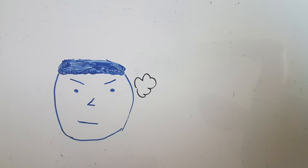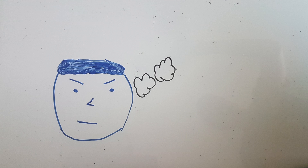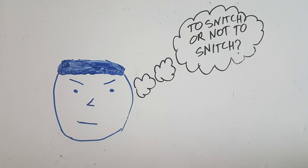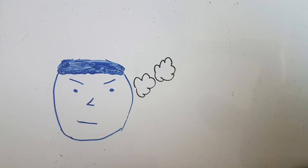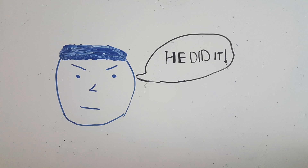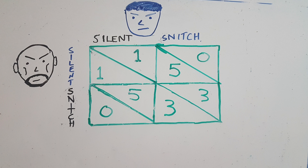Dante also goes through a similar thought process and realizes that he would be best off if he too snitches, regardless of what Boris does — he's guaranteed to be better off. If Boris stays silent, then snitching ensures that Dante will go free instead of spending one year in jail. And if Boris snitches, then snitching means that Dante can ensure he doesn't have to stay in prison for five years and instead stays for three.